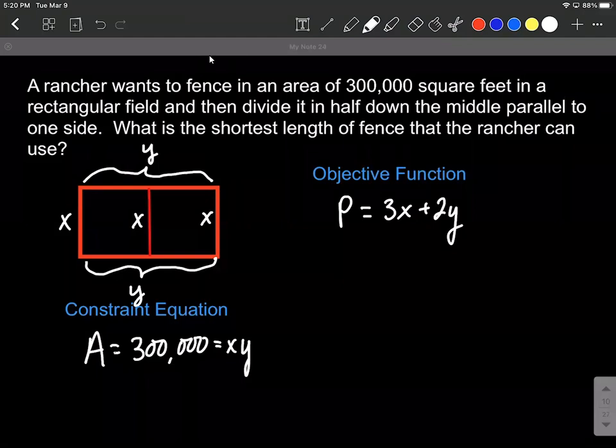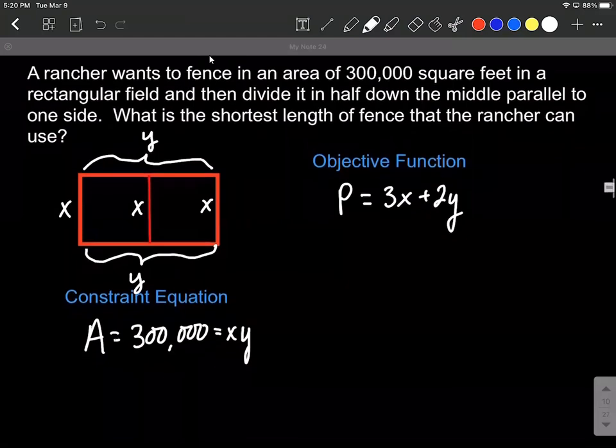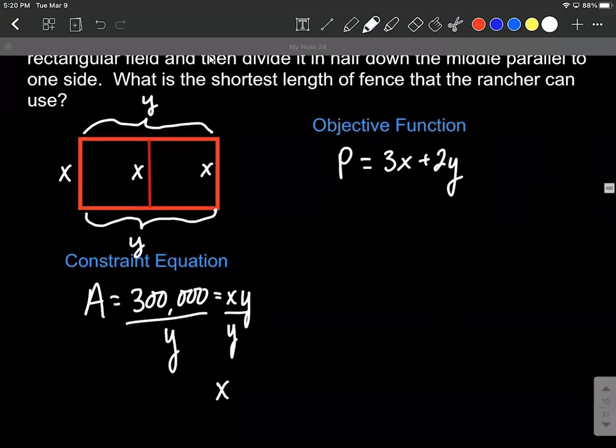What we're going to use our constraint equation for is we're going to solve that down for either x or for y. I'm going to choose to solve it down for x, although you could just as easily solve it down for y. So that gives us x equals 300,000 divided by y.